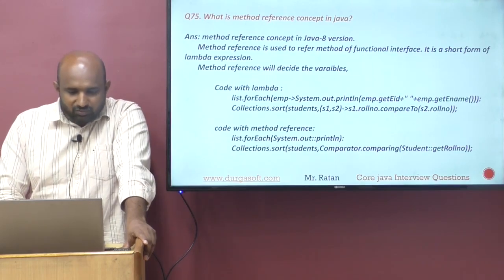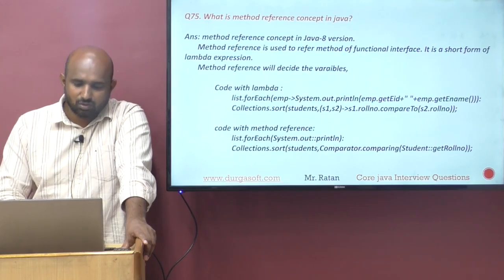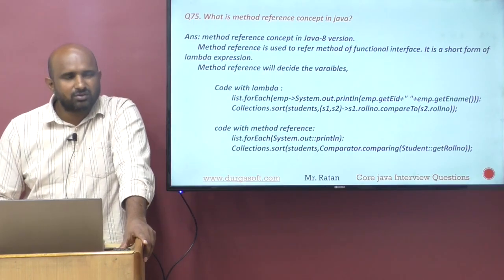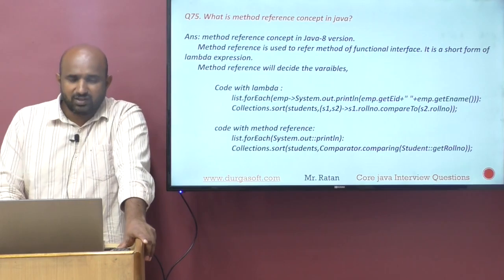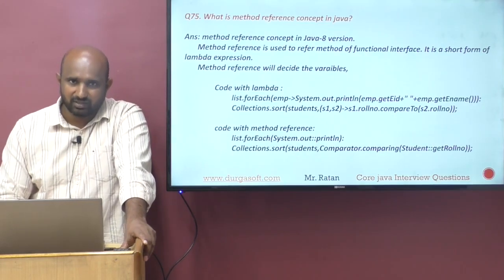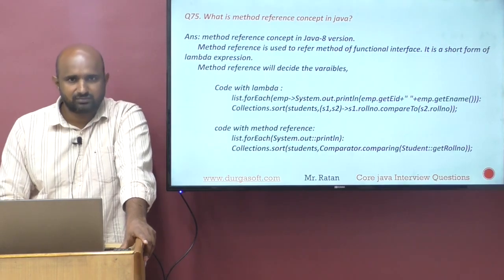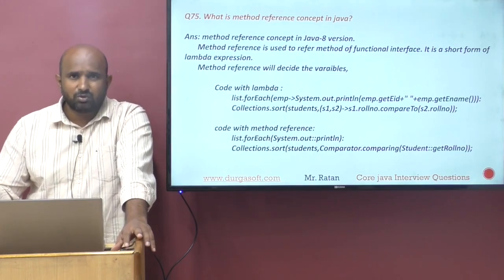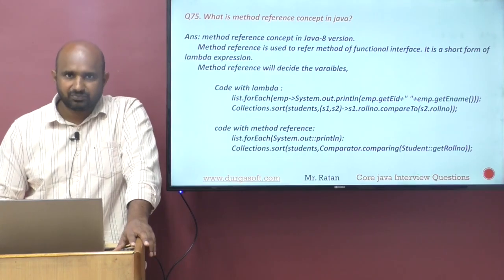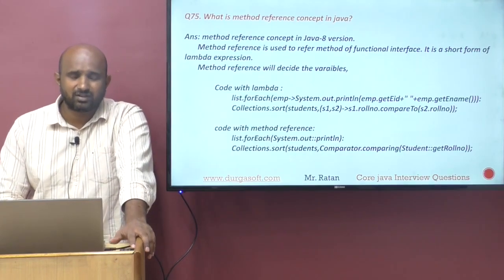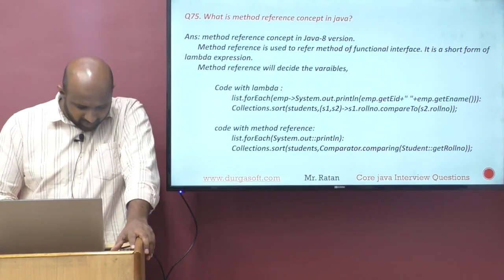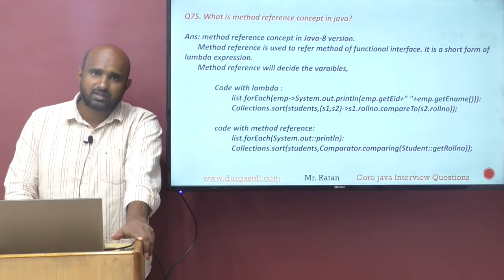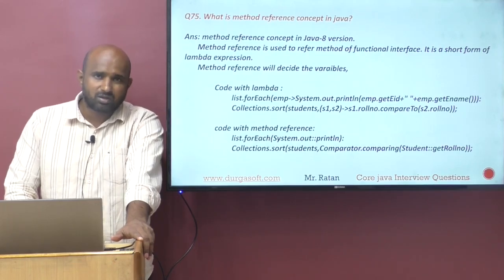For example, Comparator.comparing(Student::getRollNumber) — the double colon (::) represents method reference. In the collection framework, wherever lambda is used, you can use method reference to reduce the length of the code. Method reference is a short form of lambda expression.